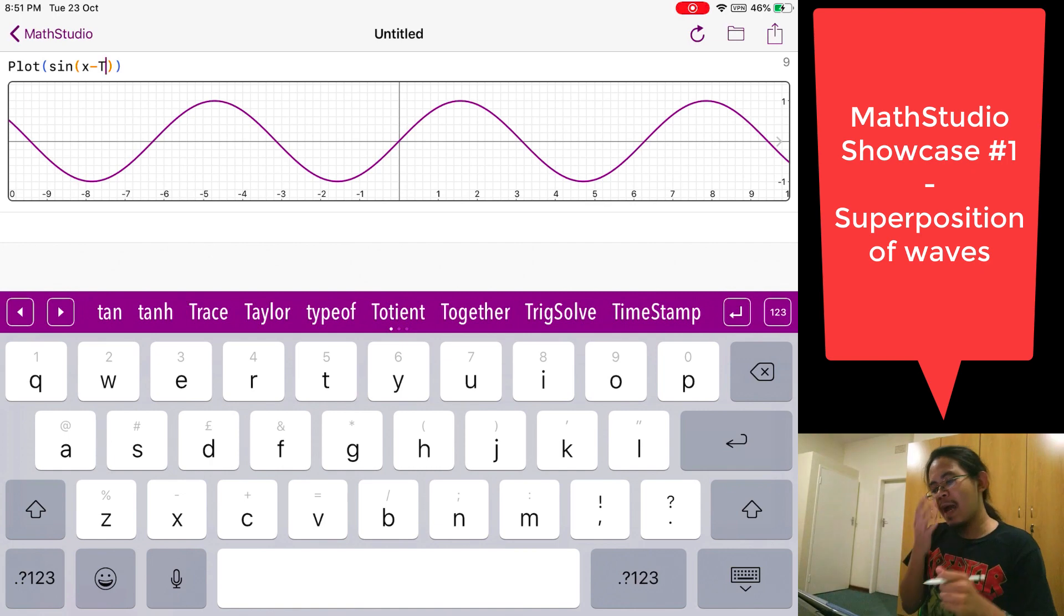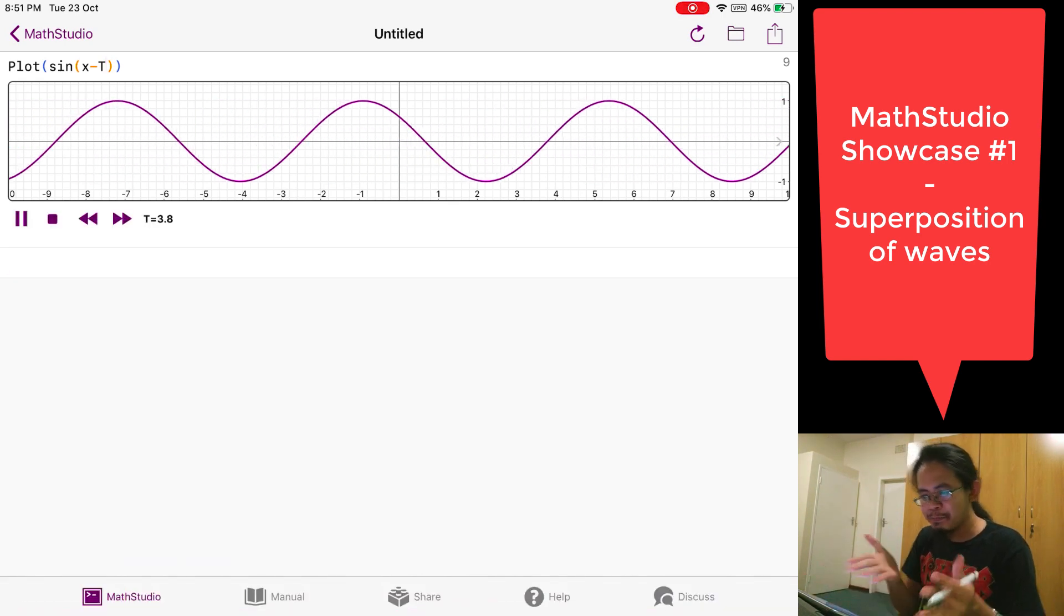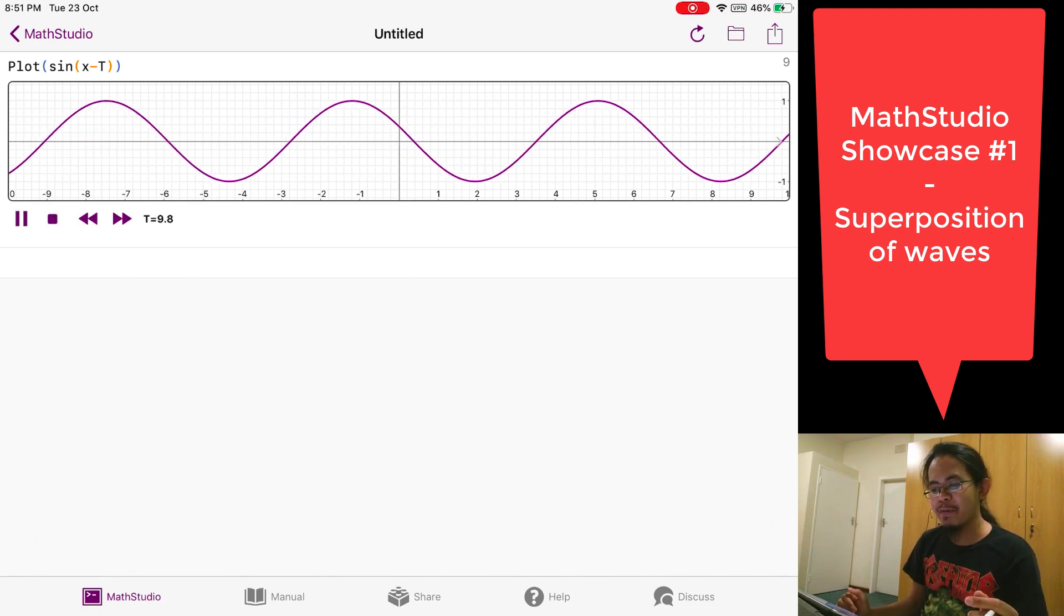So for example, if we now plot sine of x minus capital T, you expect since it's minus T, if you've taken some basic subject in physics, you'll expect this to be a wave that will be traveling to the right. And if you press enter right here, you get exactly that wave.